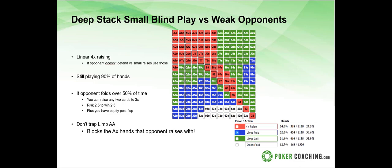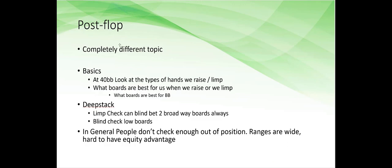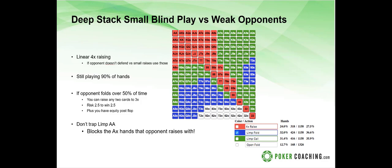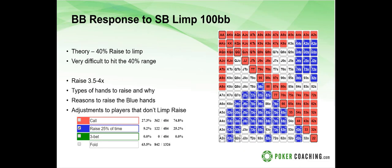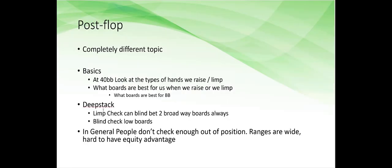Now a brief look at post-flop play in these spots — it's a different topic so we won't go deep. At 100 big blinds, we're limping nearly all hands. If it goes limp and the big blind checks back, you can remove the broadway hands from their range — no one's really checking back king-queen offsuit or king-jack offsuit. So when a board has broadway cards, you can bet at a very high frequency. When low cards come — like five-four-three or seven-five-deuce — those boards are more likely to hit the big blind who didn't raise pre-flop.